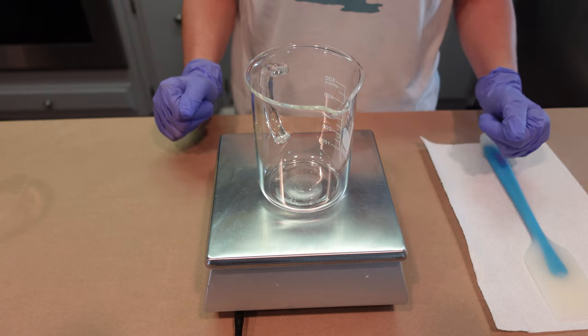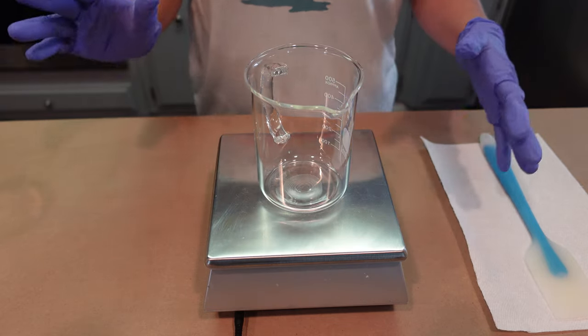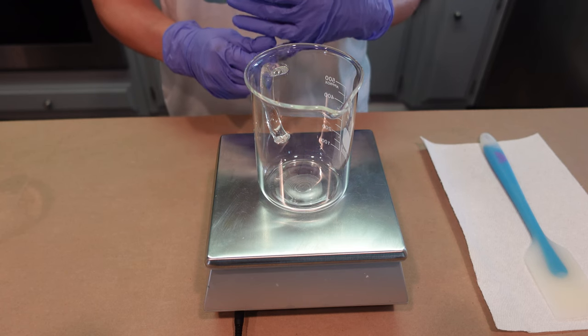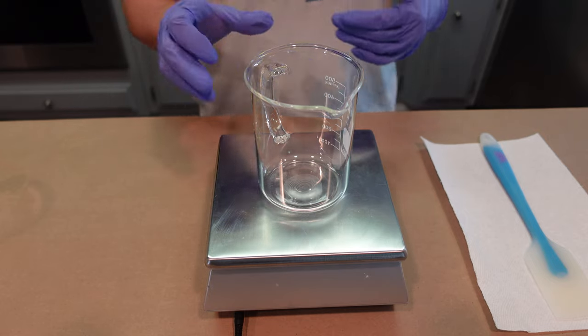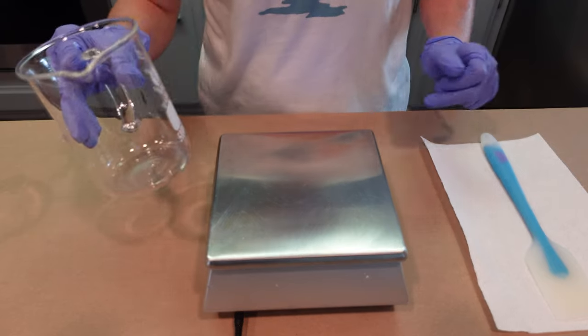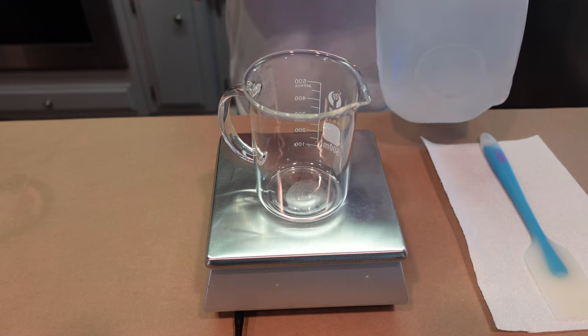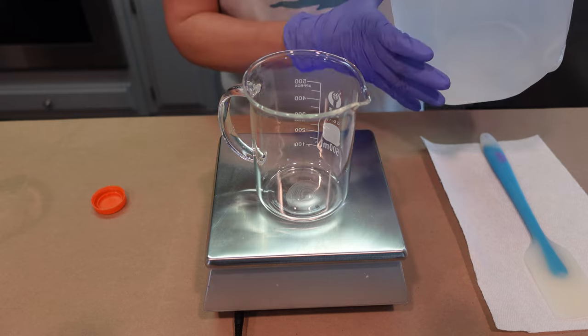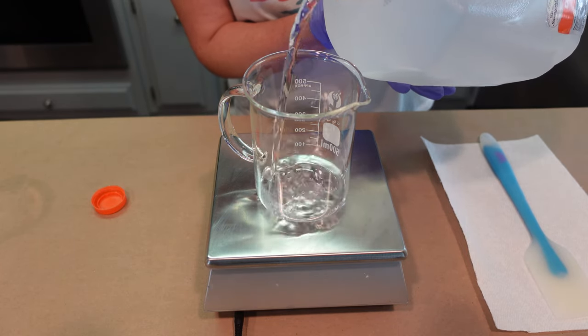All right, so the first thing we're going to do is go ahead and weigh off our water phase ingredients. So this recipe, this formula is broken up into three parts: water phase, oil phase, and a cool down phase. And we are going to be doing a water and oil emulsion. So we are going to be combining those ingredients together. So the first thing we're going to do is go ahead and weigh off some distilled water. It's important to use distilled water when you're making creams because they don't have any minerals or heavy metals in them. We're making a 400 gram batch today.